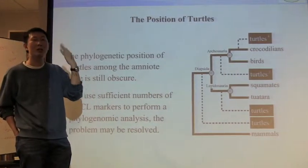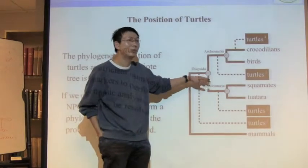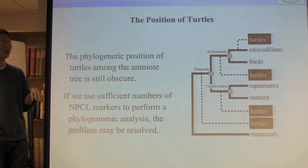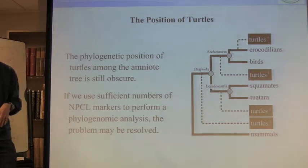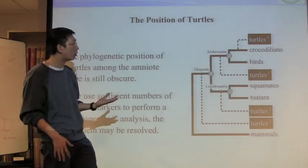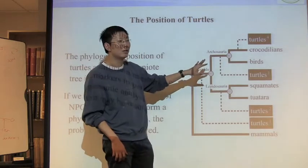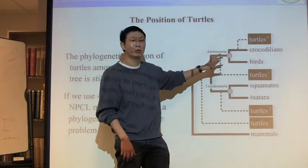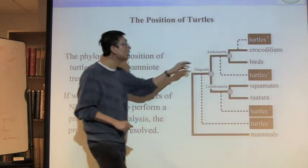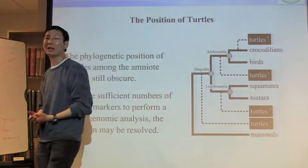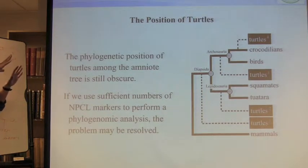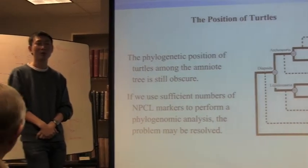Most morphological people think turtles are the basal branch of the reptile tree. Some have the thinking that turtles are close to lizards — like a recent paper using microRNAs supporting that. Many papers support turtles as the sister group of archosaurs — that's birds and crocodiles. But some very strong evidence supports turtles being close to crocodiles only. So that's four hypotheses, and many papers argue for each one. We are trying to use these NPCR markers to resolve this problem.